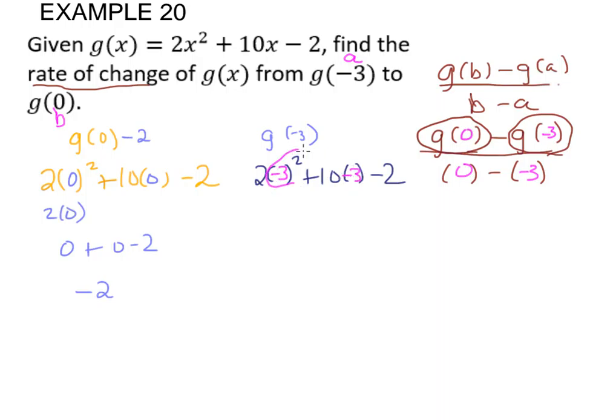Negative 3 squared, that's 9, times 2 is 18. 10 times negative 3 is negative 30 minus 2. Negative 18 minus—or sorry, 18 minus 30 is negative 12, minus 2 is negative 14. Okay, so we know that g of negative 3 is negative 14.